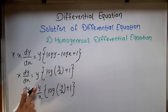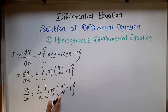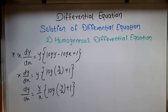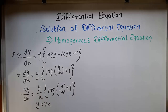Because every term has degree 1 — this has degree 1, this has degree 1, this has degree 1 — all terms have the same degree. So this is the homogeneous form. In the homogeneous form, we put y equal to vx.